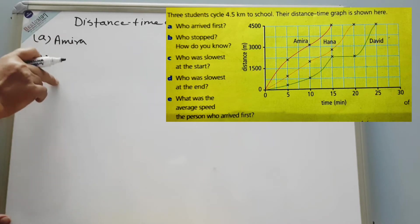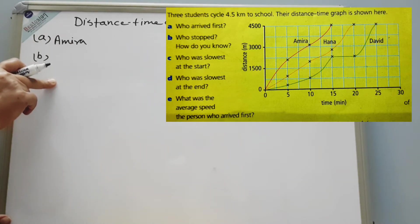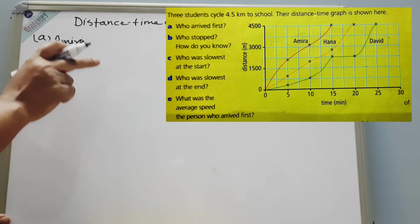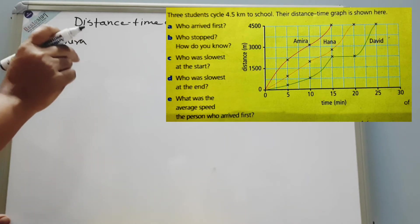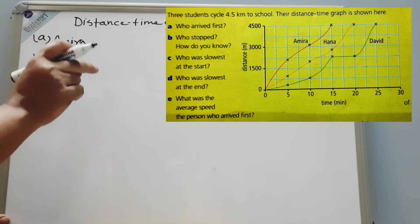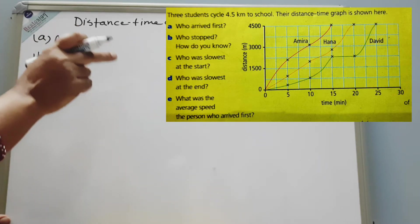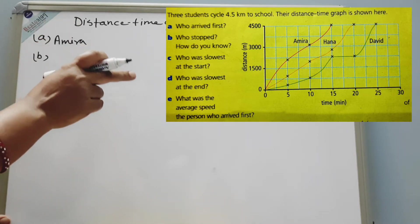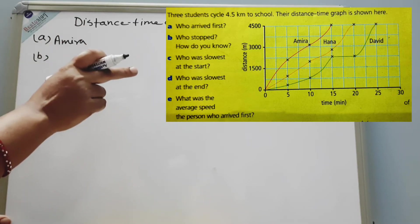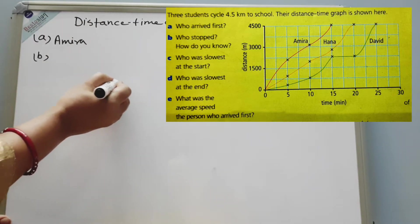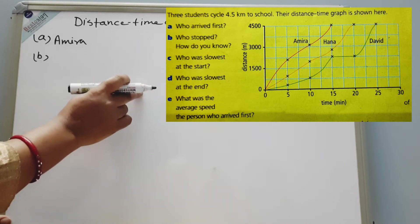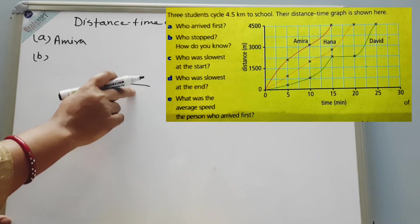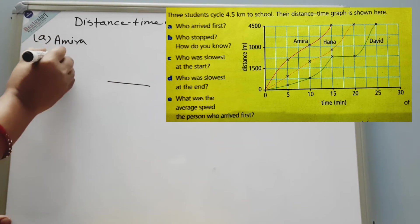Question B is: who stopped? How do you know? Looking at all three graphs, if you look at David's graph, there is a line which is parallel to the x-axis. It means that during that time, time was going but there was no change in distance. So we can say David stopped in between. If you see a graph parallel to the x-axis — parallel to the time axis — then this is the graph for not moving; the object is stationary. So the answer is David.